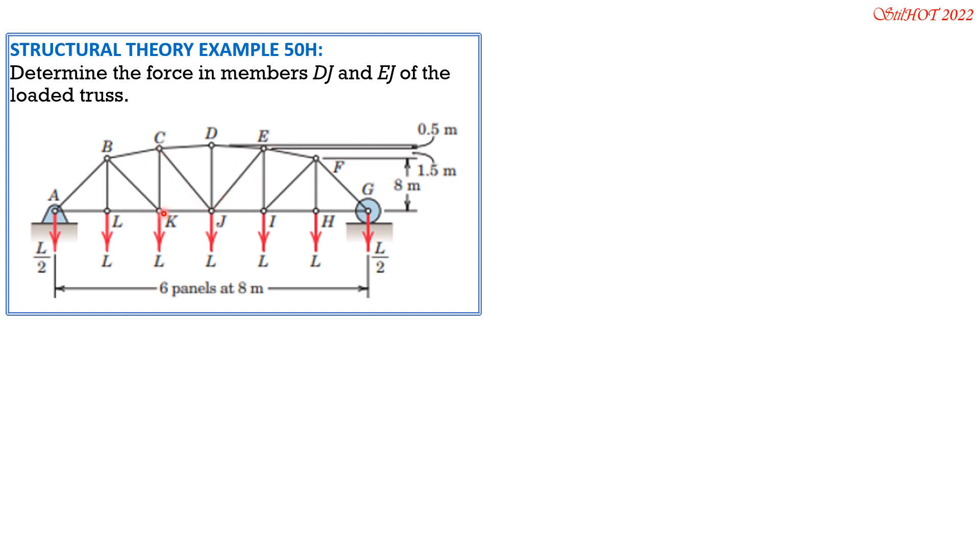In fact, JK is equal to GI and so on and so forth. So by symmetry of the loading, the total load is 1, 2, 3, 4, 5 plus 0.5 plus 0.5, so 6L. Therefore there's no inclined load, therefore the vertical reactions at A and Z equal to 3L each.